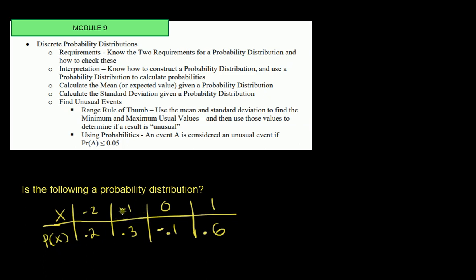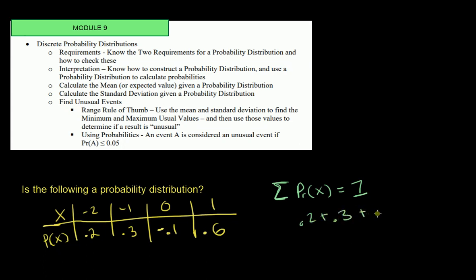The first type of question you should be able to answer is: is this a probability distribution? There are two requirements. The first requirement is that the sum — Sigma means sum — of the probabilities P(X) should sum up to one. Let's check: 0.2 plus 0.3 plus negative 0.1 plus 0.6 equals one, so that requirement is met.